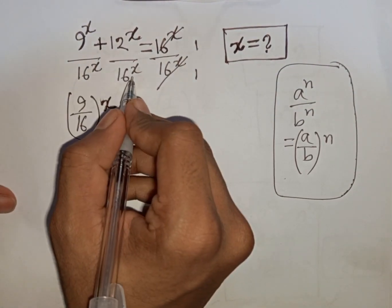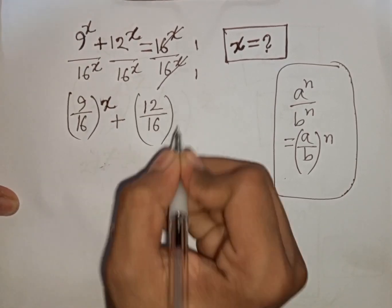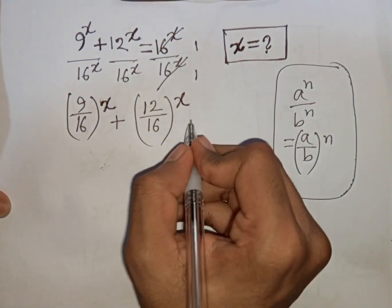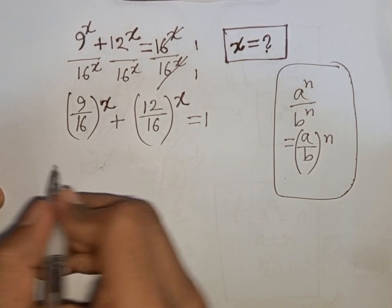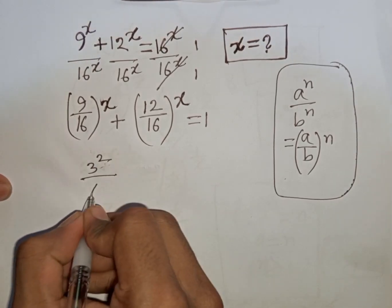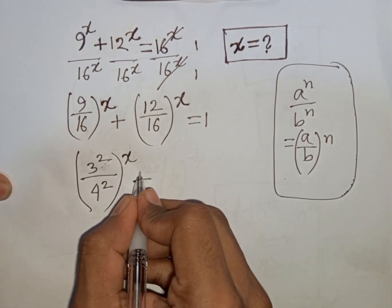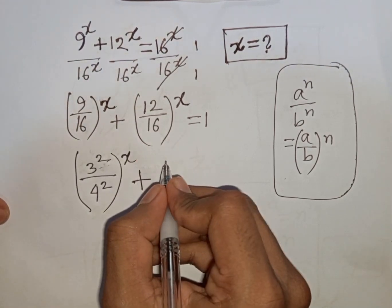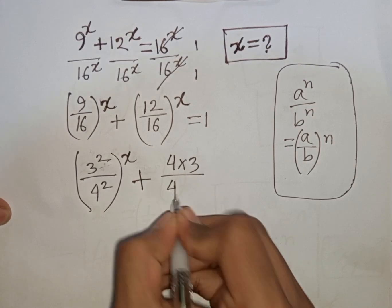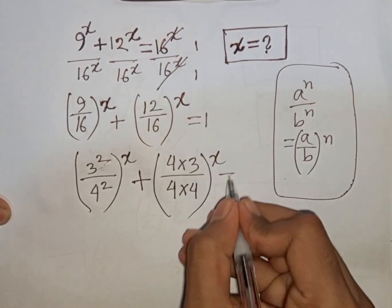So 12^x divided by 16^x becomes (12/16)^x. The right side equals 1. Now 9 is the same as 3², and 16 is the same as 4². Then 12 is the same as 4×3, and 16 is 4×4, so bracket to the power x equals 1.